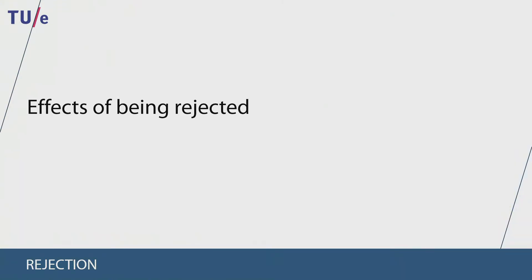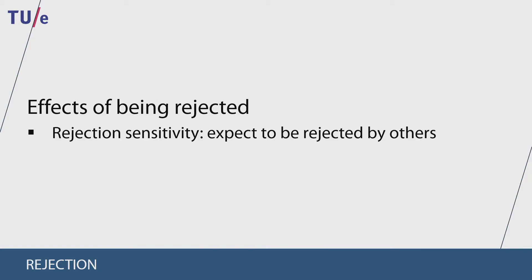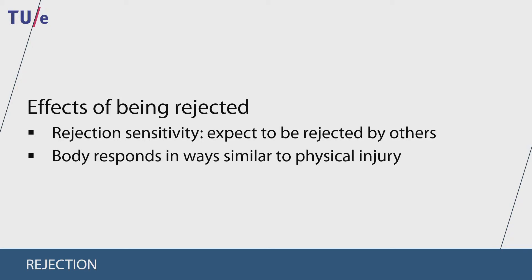Being rejected can have many effects on people. Repeated rejection could for example lead to rejection sensitivity, which means that people start to expect being rejected by others and become hypersensitive to possible rejection. Our bodies also respond to rejection in similar ways as it does to physical injury. People also report pain, illness, depression, helplessness, eating disorders, and feeling worthless.